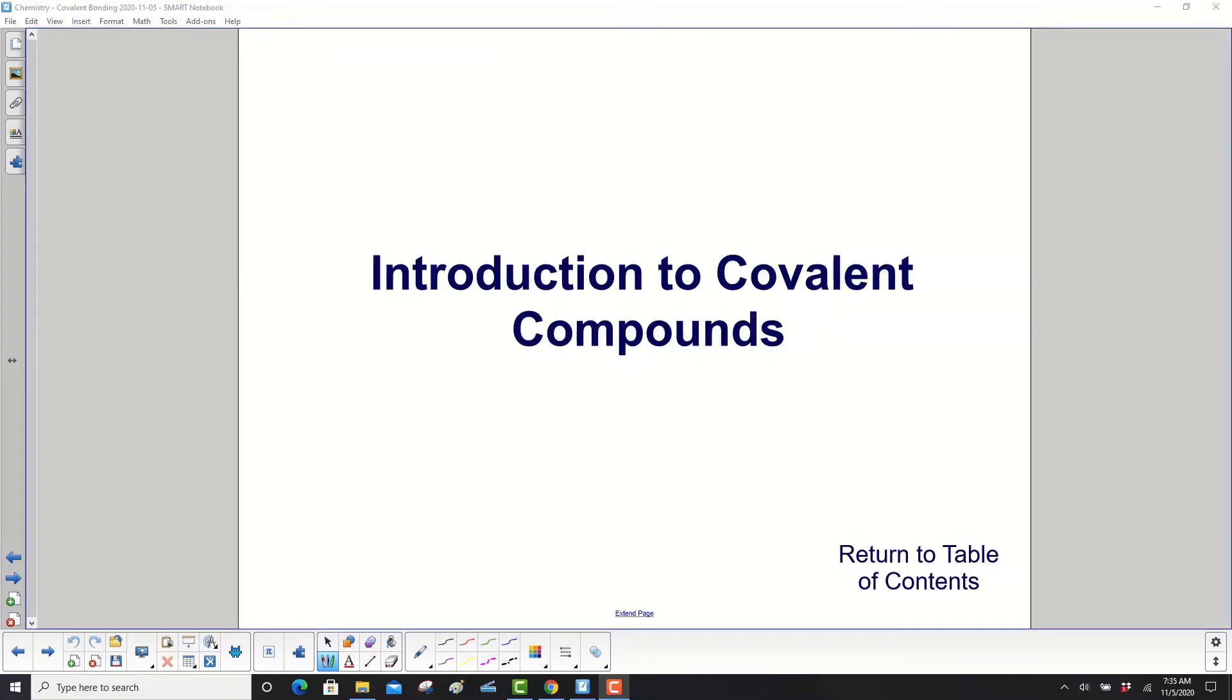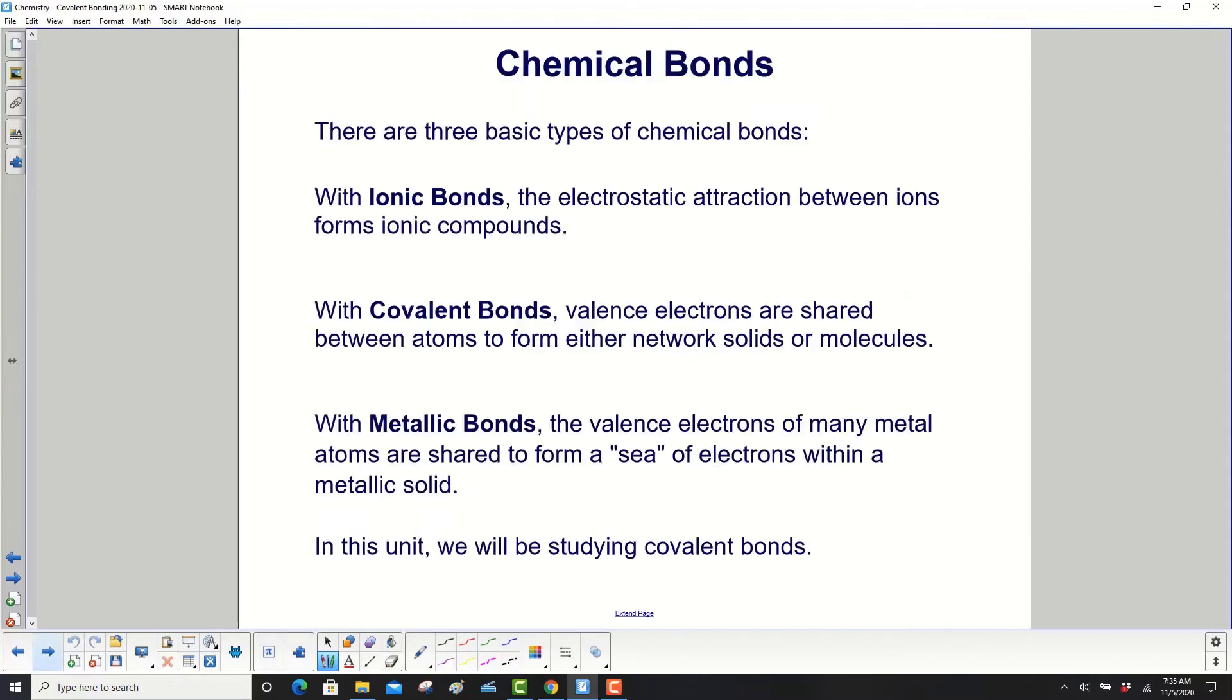Introduction to covalent compounds. There are three basic types of chemical bonds. We have ionic bonds, where the electrostatic attraction between ions forms ionic compounds. Covalent bonds - valence electrons are shared between atoms, and they form either network solids or molecules.